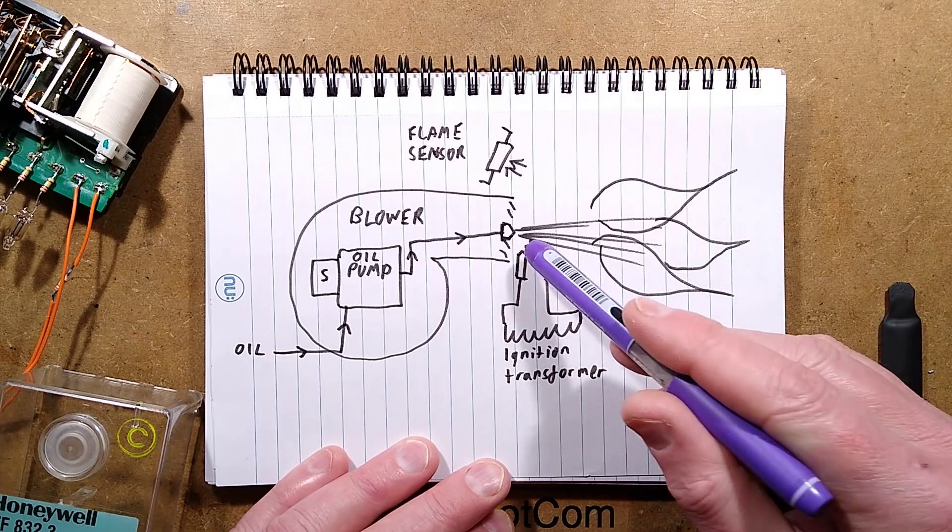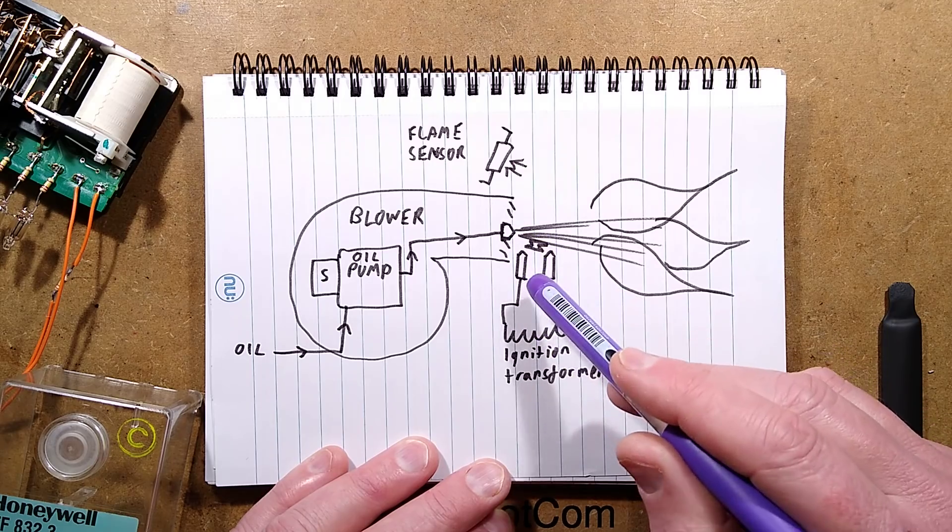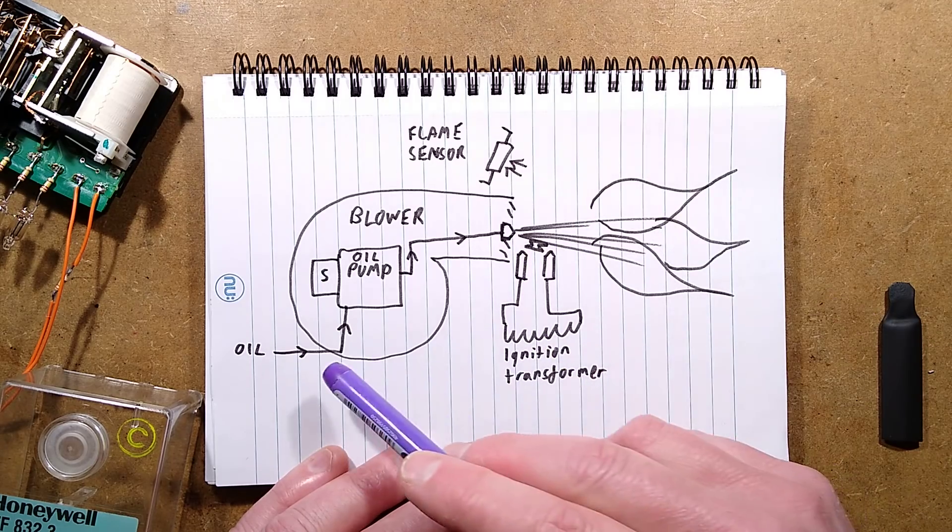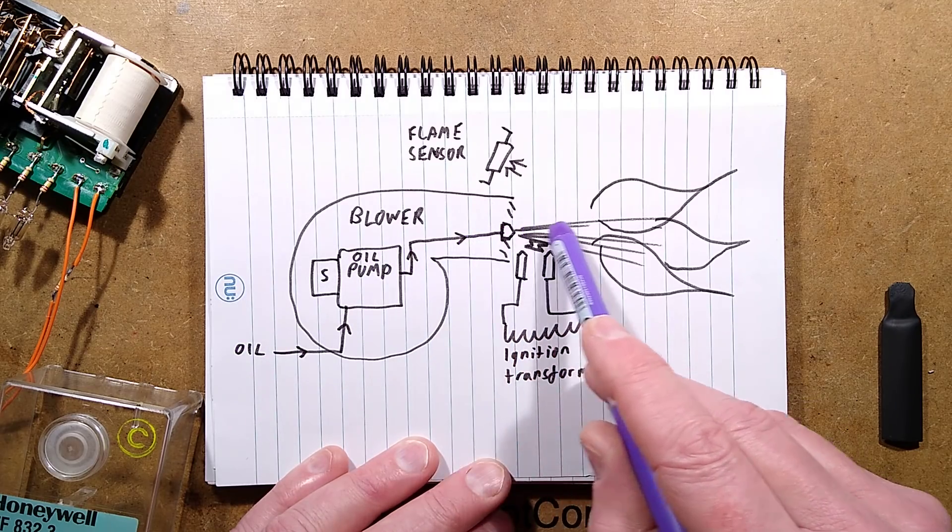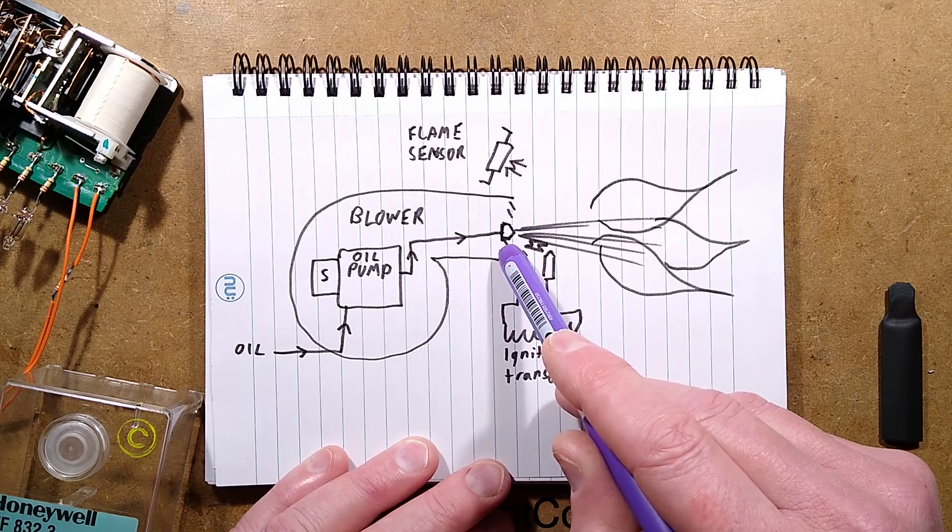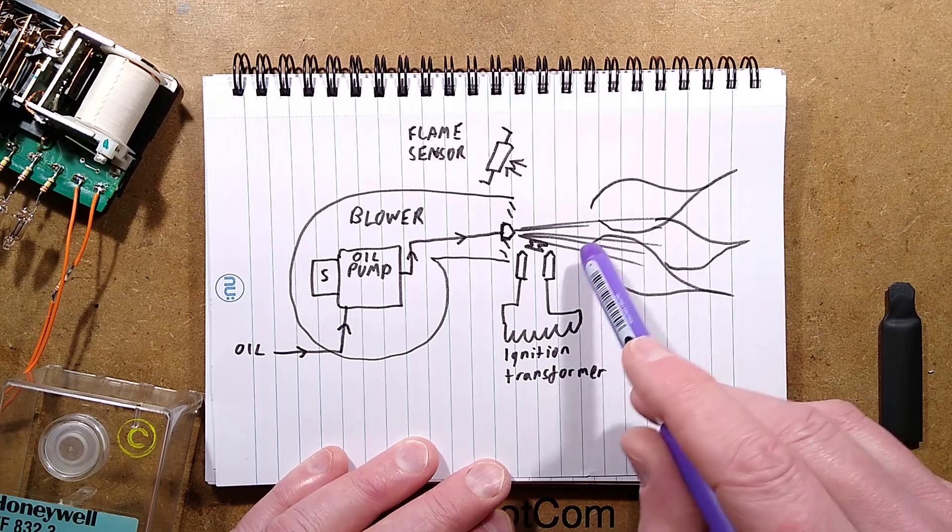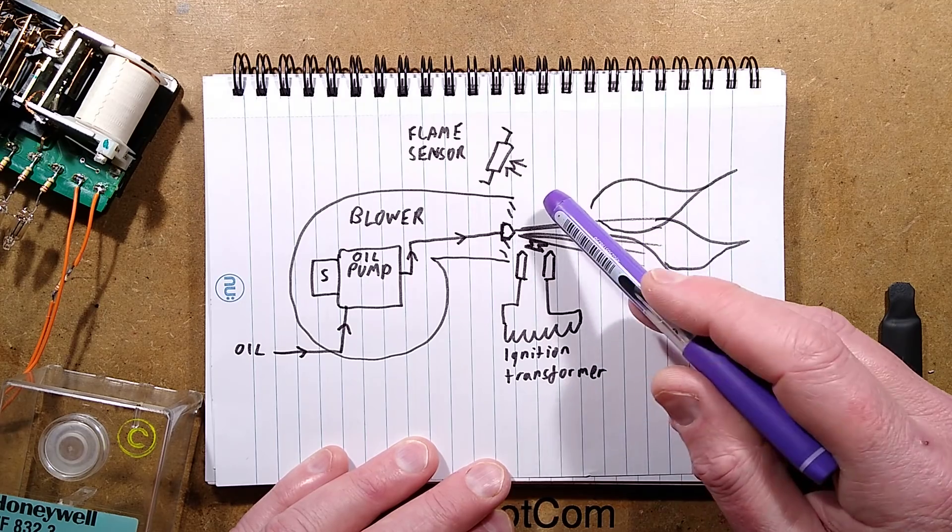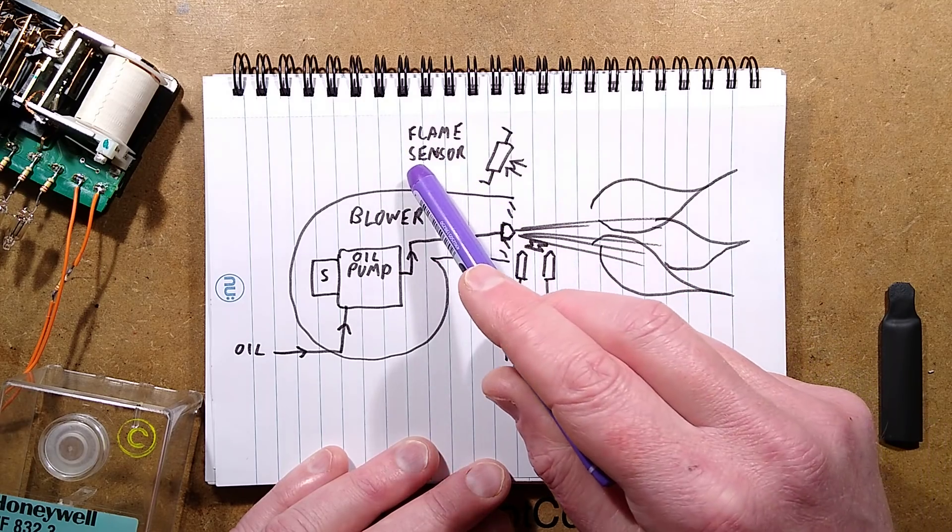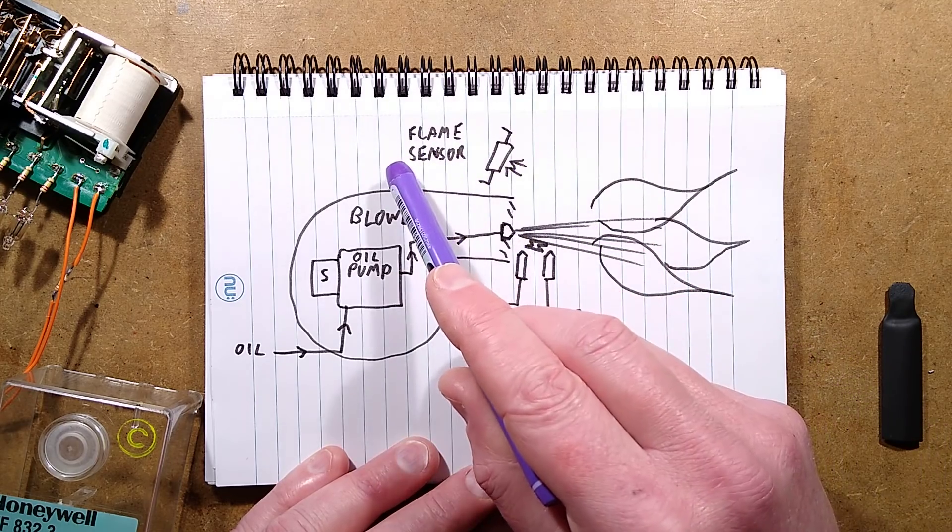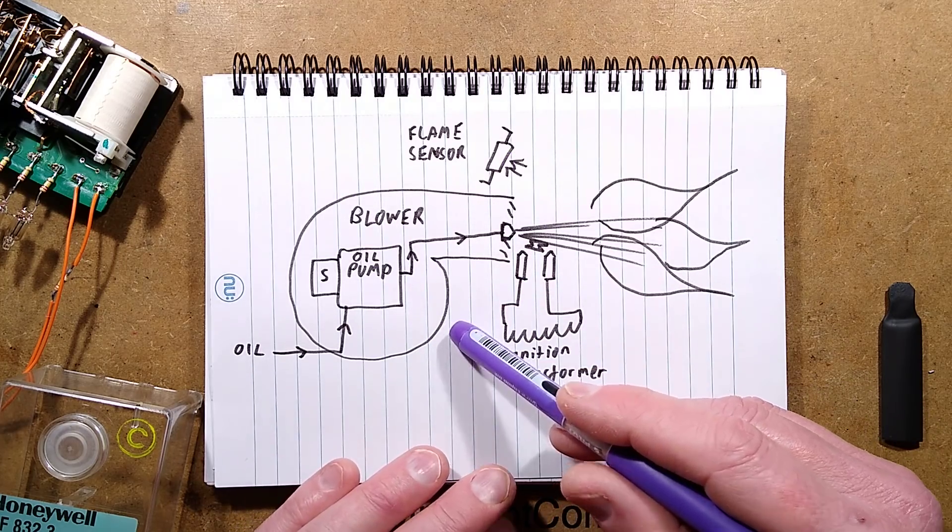The sequence of operation is that the blower starts up and the oil pump is just circulating inside, but it blows for a certain length of time to actually purge air through the system. At the same time, in this particular unit, the high voltage spark starts appearing at the nozzle. After it's purged air for a while, the solenoid operates and now oil will flow through the pump and it will be atomized from a fine jet that looks very similar to a 3D printer jet. If everything goes to plan, the spark ignites the oil vapor, it bursts into flames.